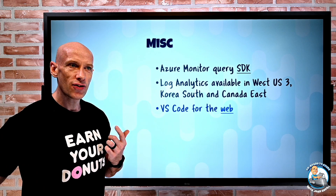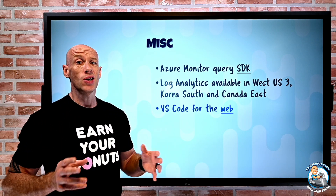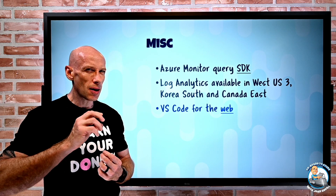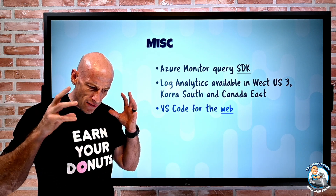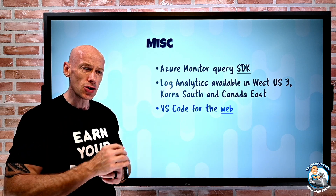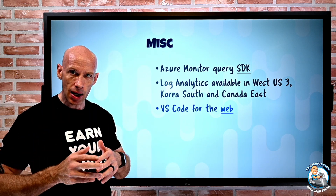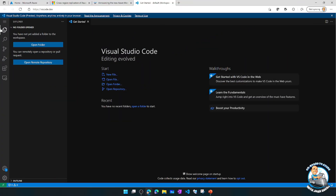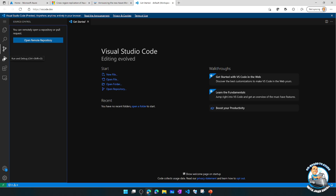VS Code has been released for the web. VS Code is awesome — I use it all the time in my demos as an installed software package. Now, if you've ever used GitHub, you can go to GitHub.dev where you get basically VS Code in the browser, but that version is very much geared towards GitHub. What we now have is a more generic version we can leverage. So here I've gone to VSCode.dev — there's no installation. This is running 100% in the browser. If I'm using Chrome or Edge, I also get fantastic access to my file system after I give it permission. You can see I've got this nice experience all running in the browser.